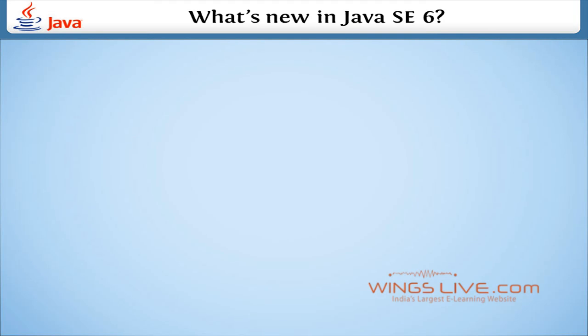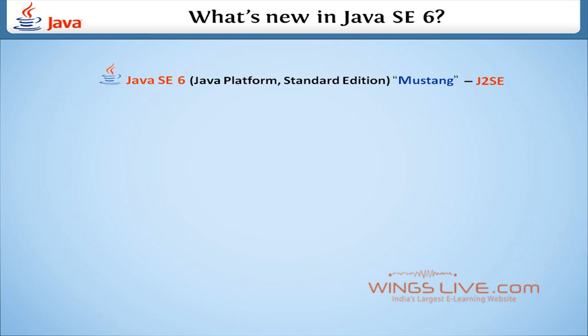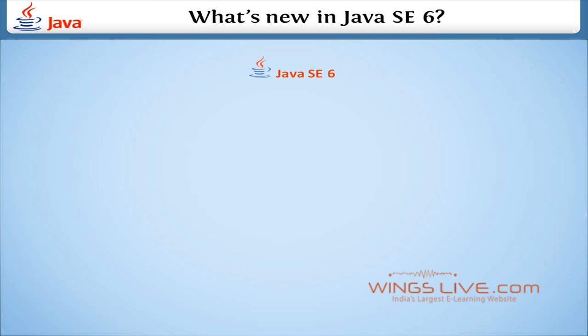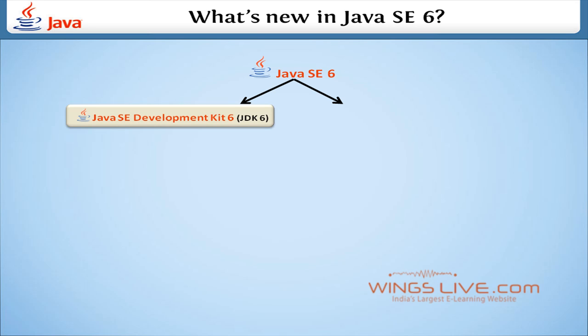What's new in Java SE 6? Java SE 6, or Java Platform Standard Edition, which has a codename of Mustang, is the new name and current version for what was previously known as J2SE. This current release is identified as product version 6 and developer version 1.6.0. Java SE 6 has two products delivered under the name of the platform: Java SE Development Kit 6 (JDK 6) and Java SE Runtime Environment 6 (JRE 6).